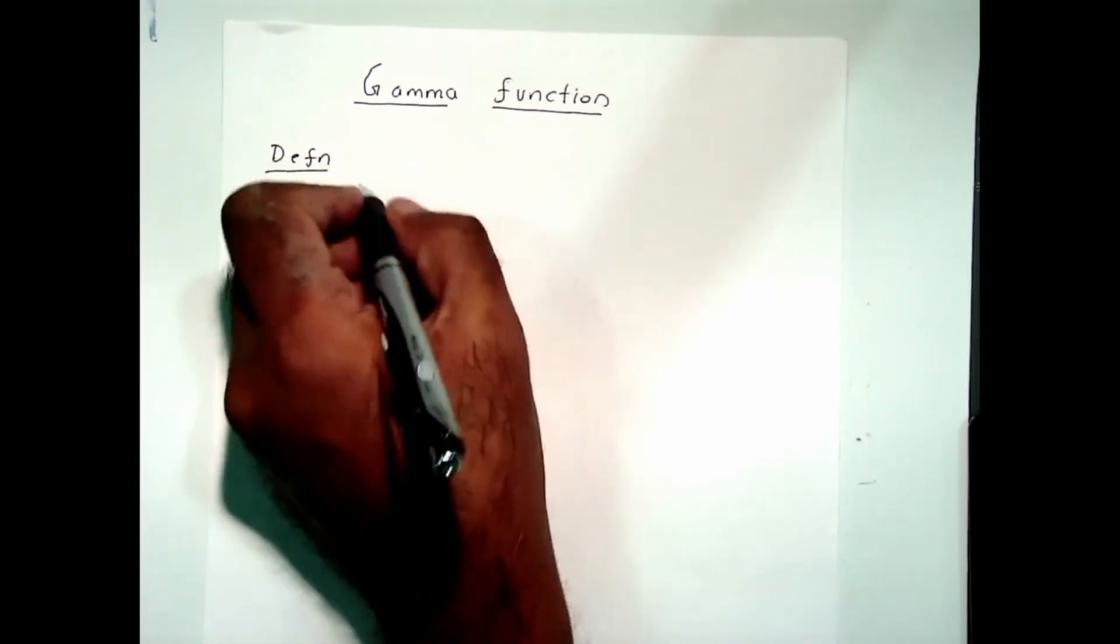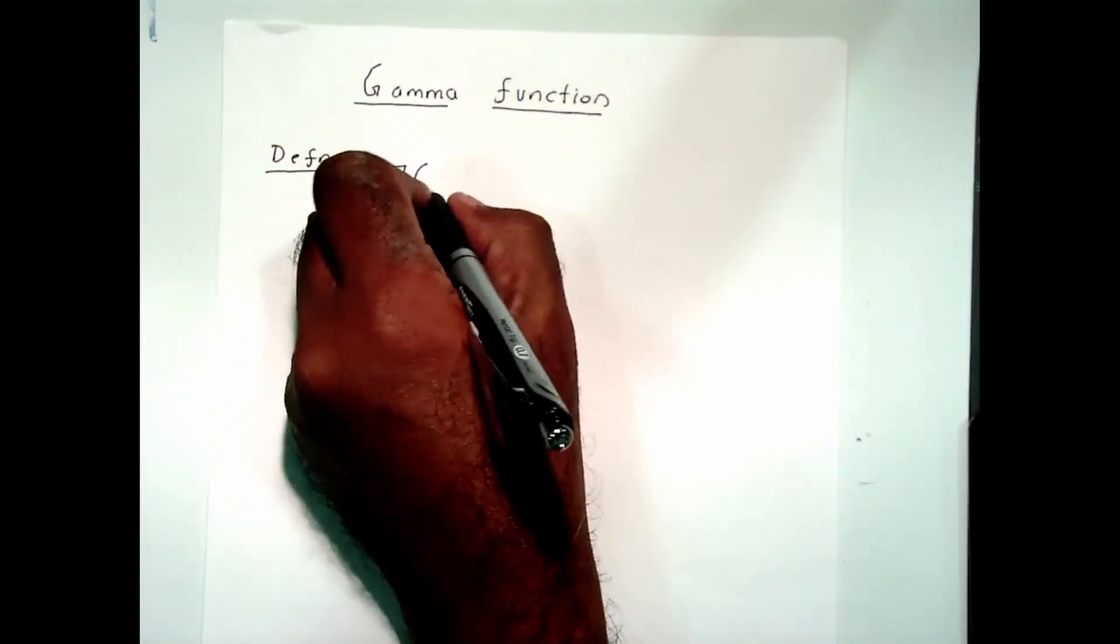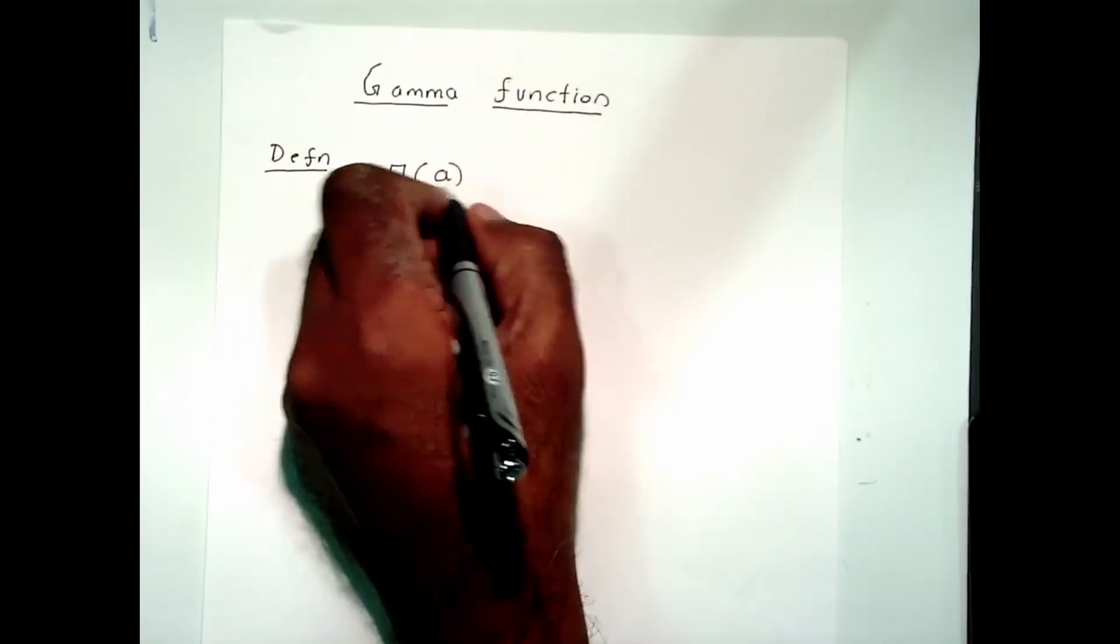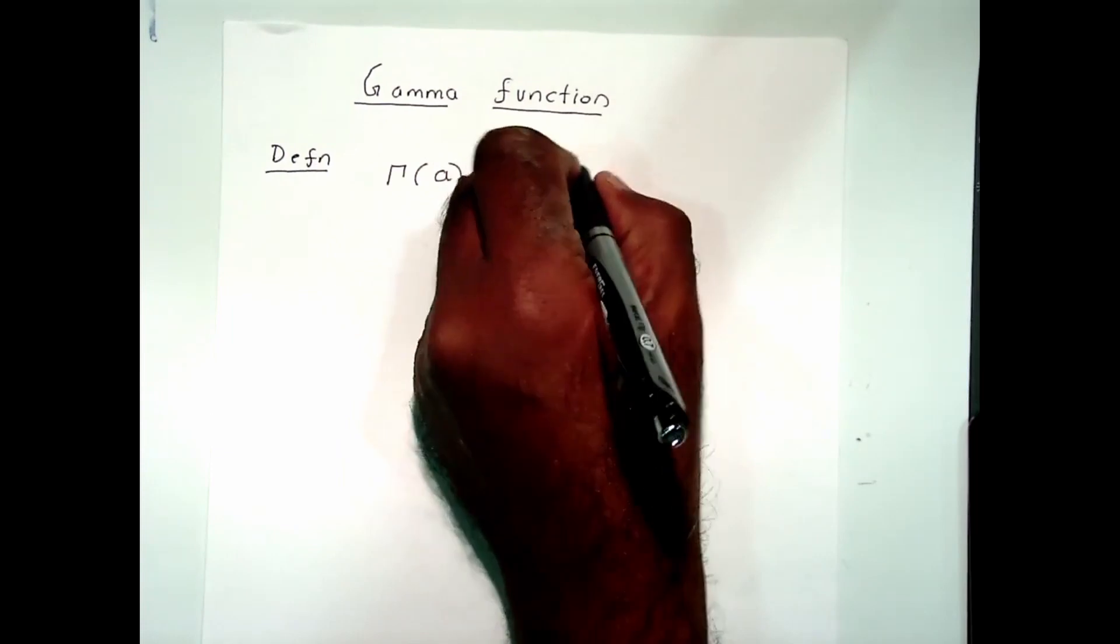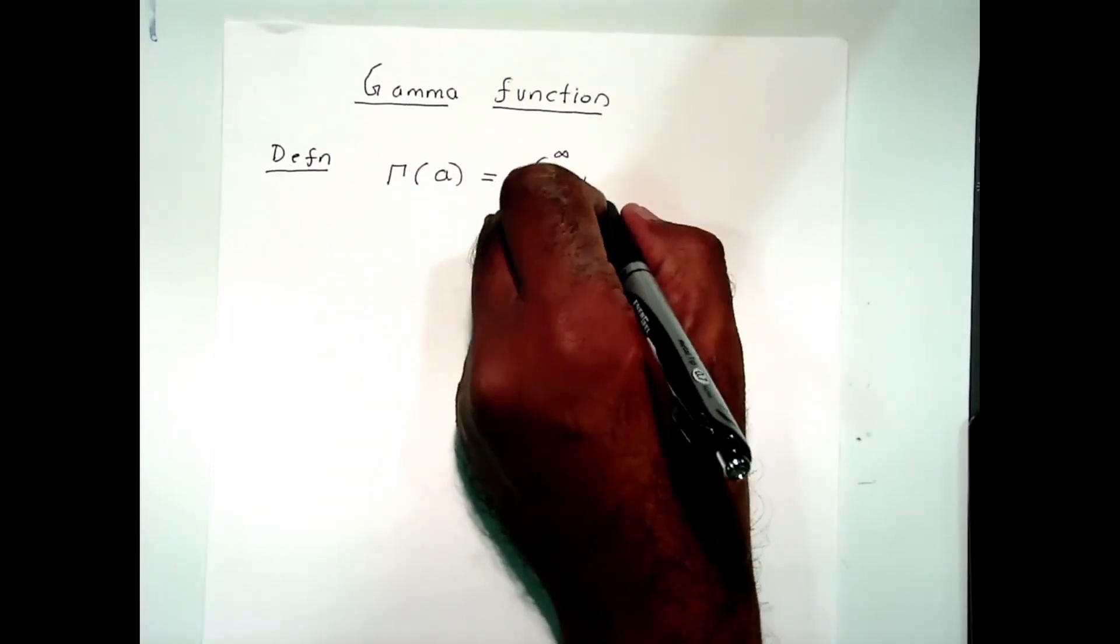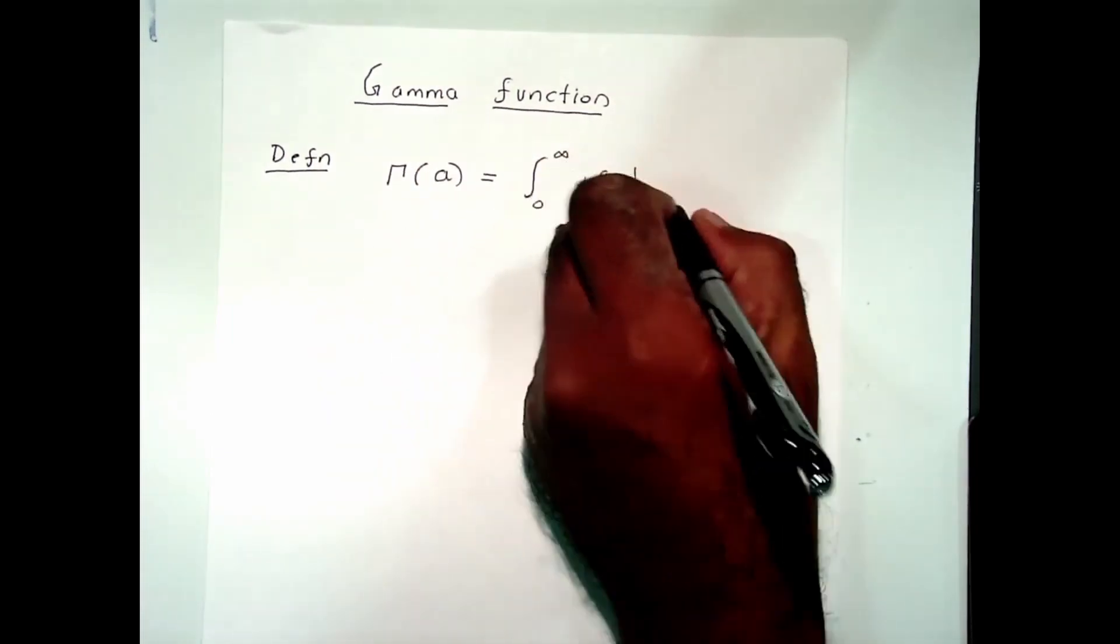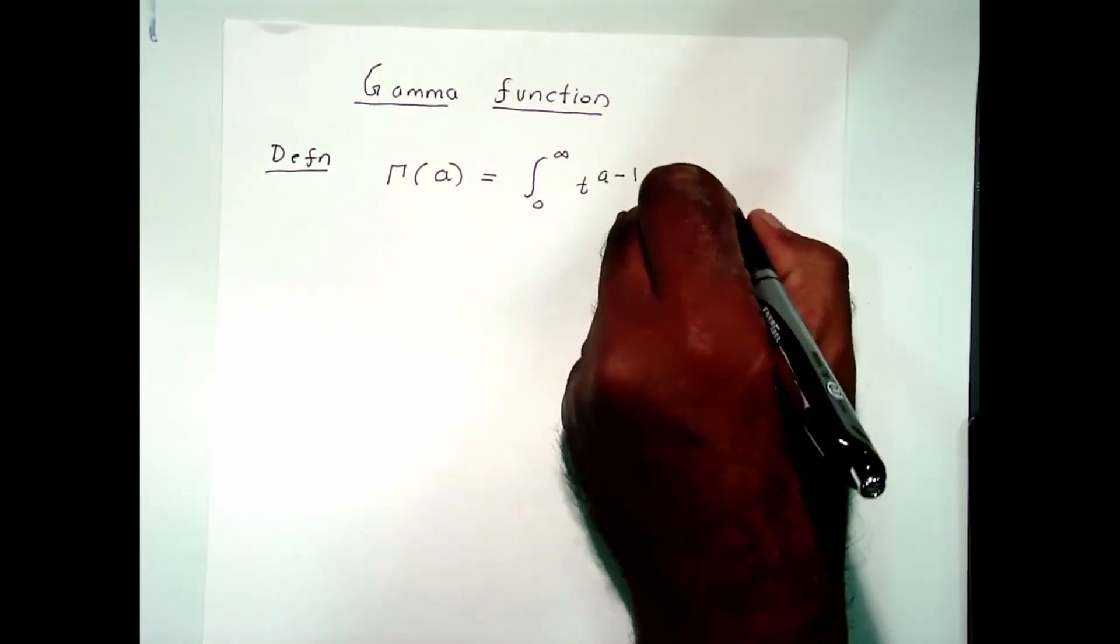The definition of a gamma function is: gamma of a is defined as the integral from 0 to infinity of t to the power a minus 1, e to the minus t, dt.